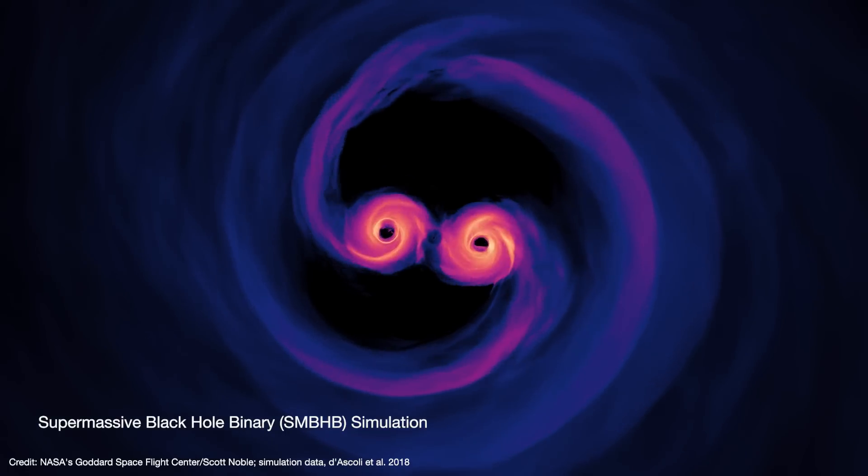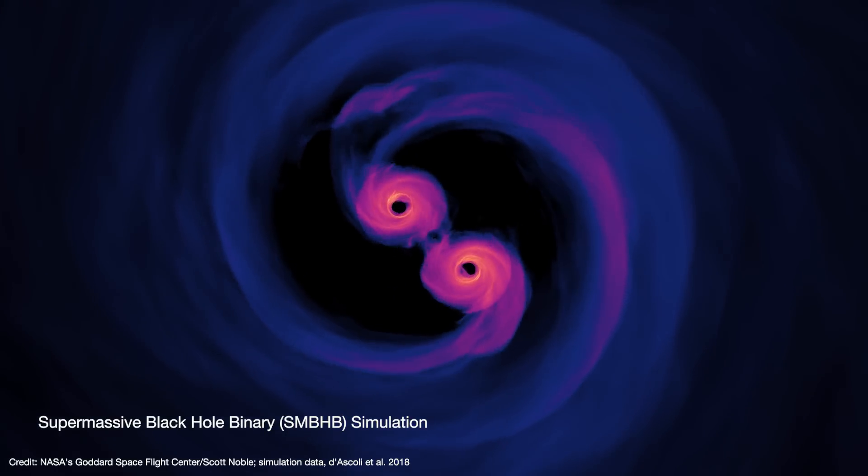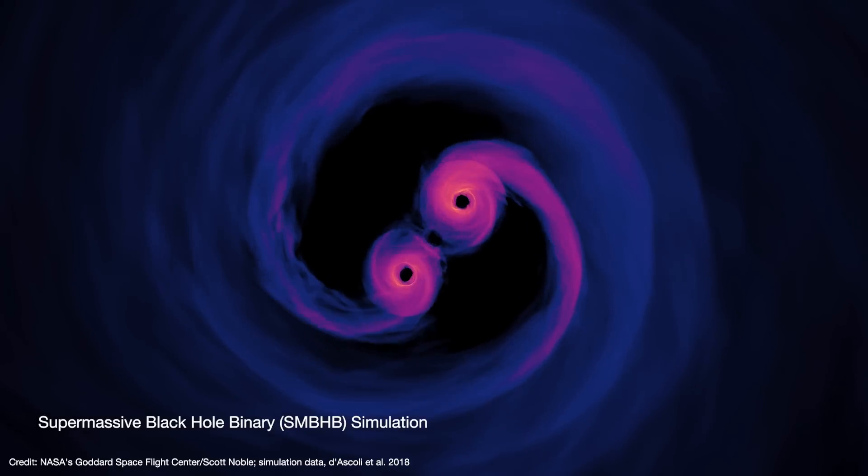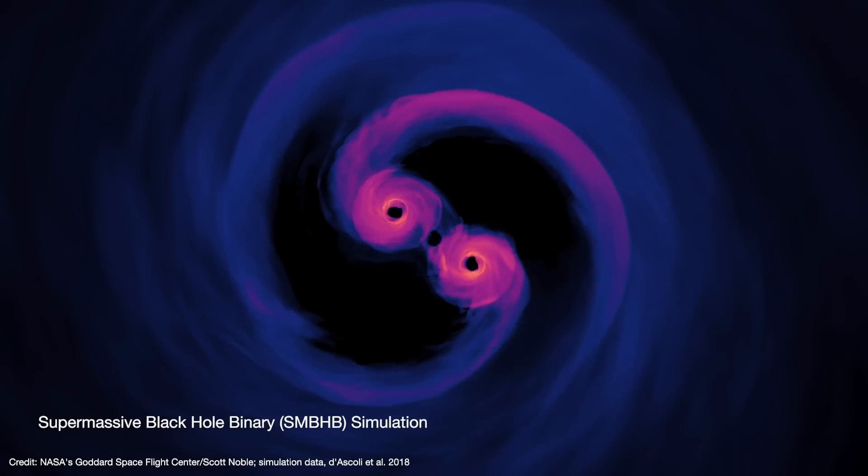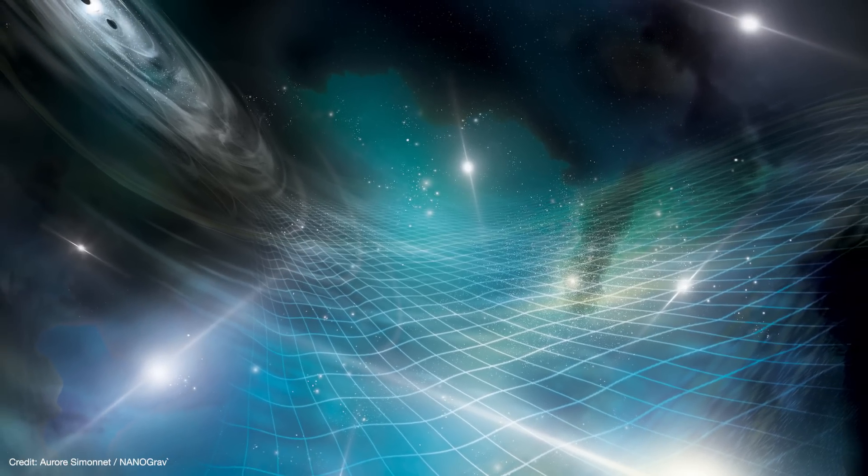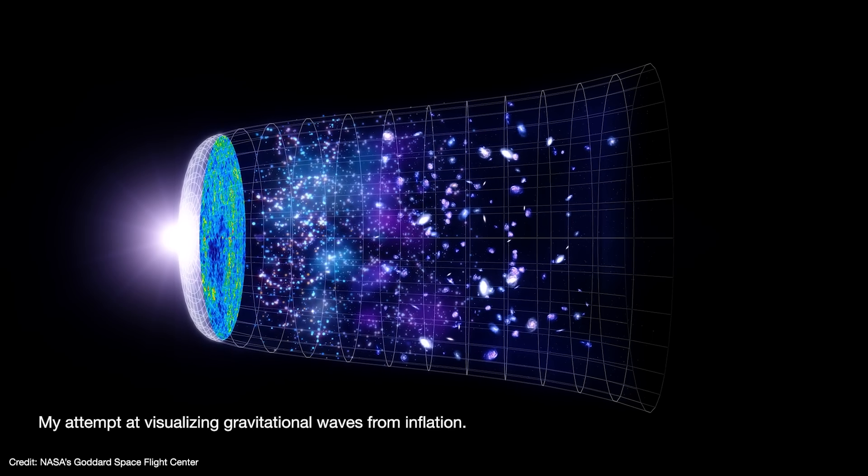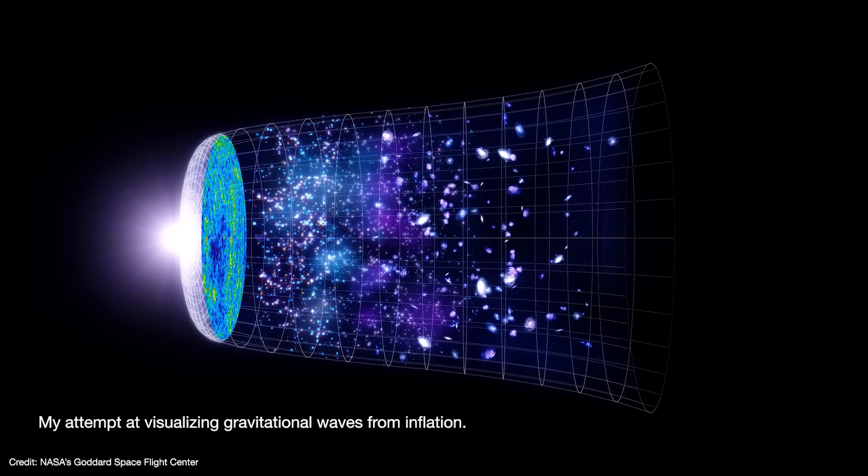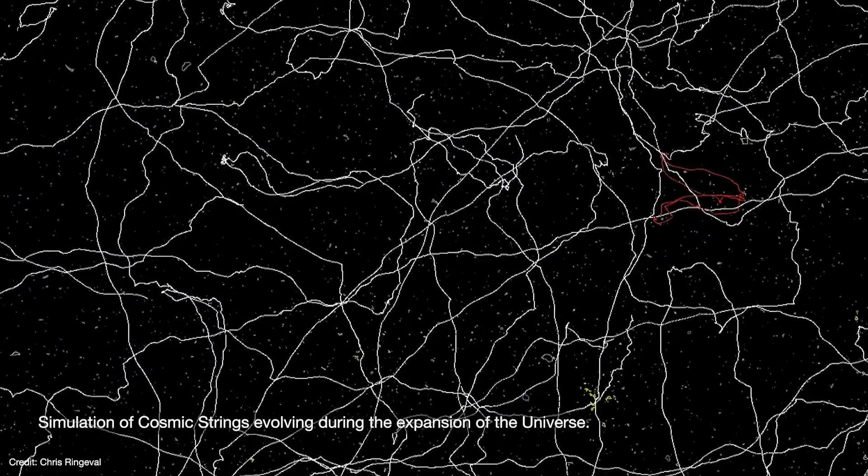We don't know exactly where they're coming from yet, but it's thought that most of them are probably due to supermassive black hole binary systems. In order to detect gravitational waves that are light years long, you need a detector that's also light years long. So astronomers use an array of pulsars to create a galaxy-sized gravitational wave detector. And if that weren't cool enough, the data also suggests there may be additional waves coming from the Big Bang itself. If that's really the case, then we may be detecting waves coming from inflation or even cosmic strings.